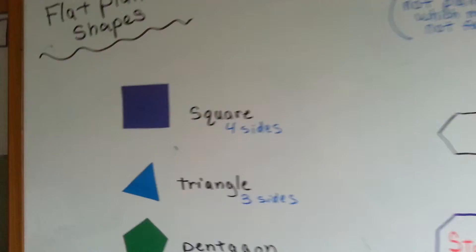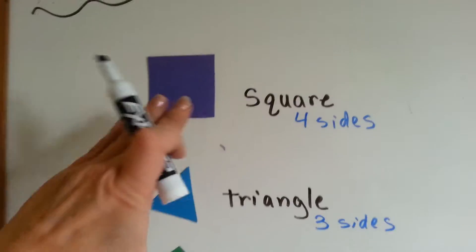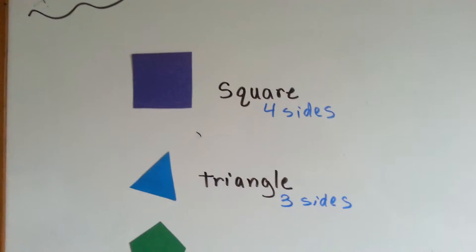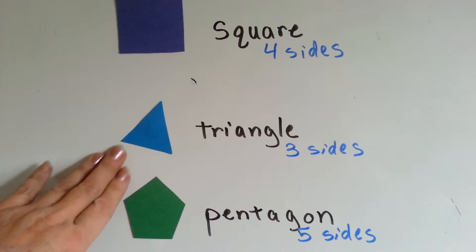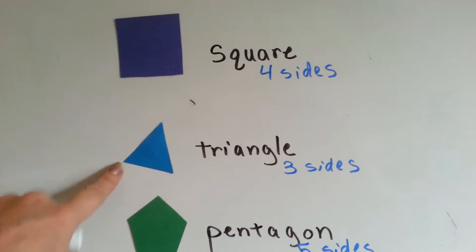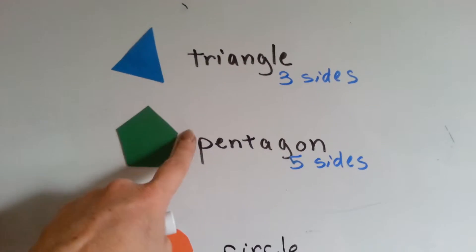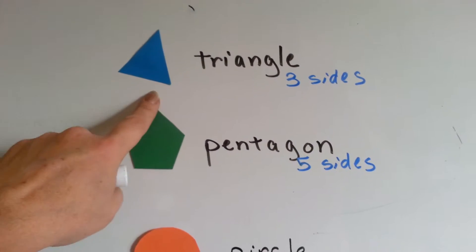A square has 4 sides and it's a flat plane shape. A triangle that's flat, like this, has 3 sides. A pentagon has 5 sides.